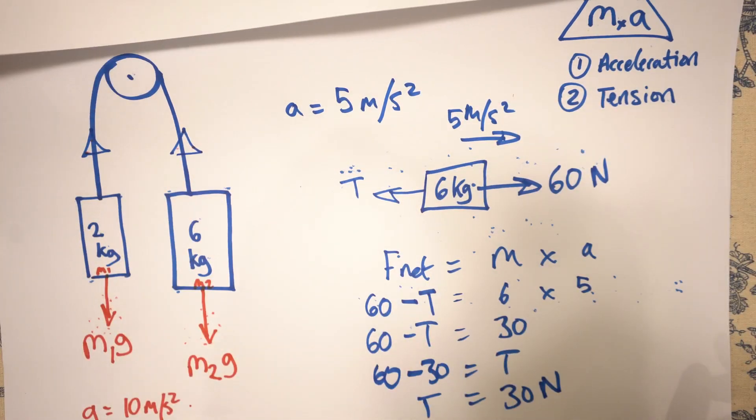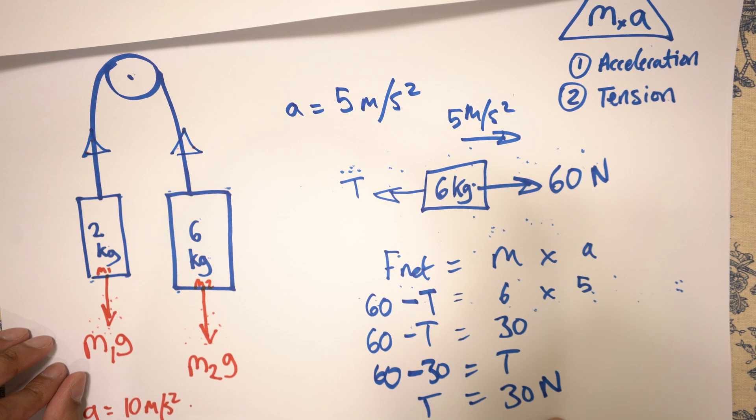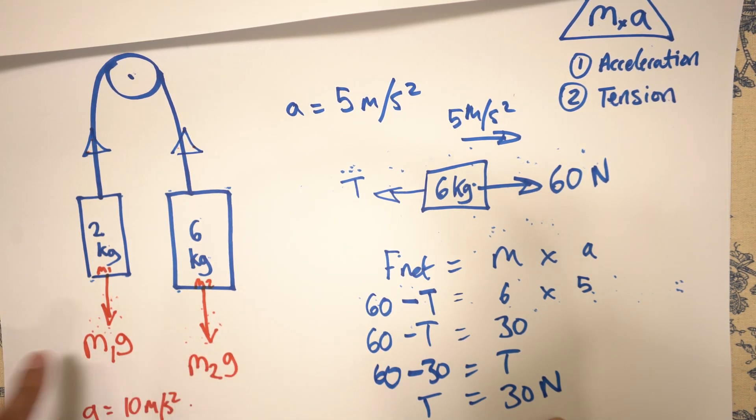Secondly, if you look at this 30 newtons, this tension, it's going to be smaller than this force. And it's going to be bigger than that force. So it's going to fall in between.